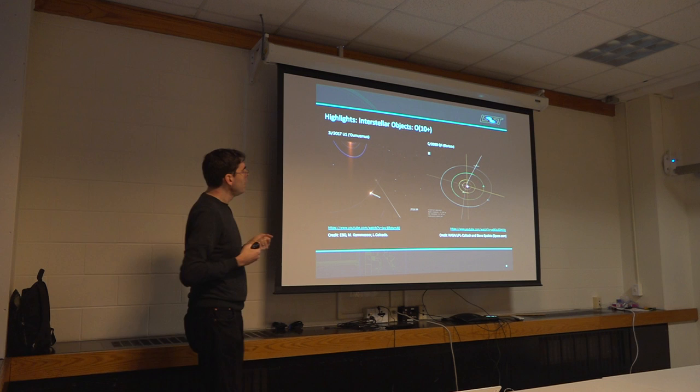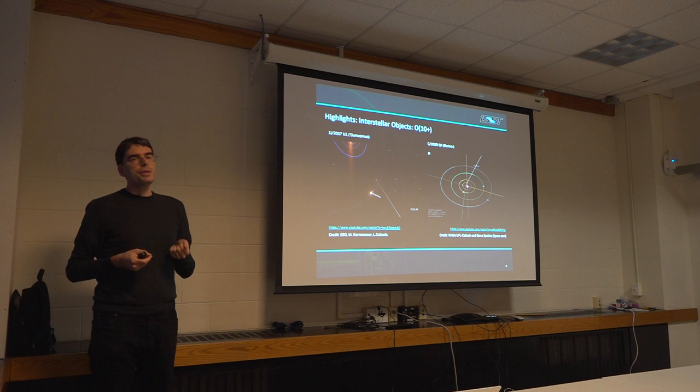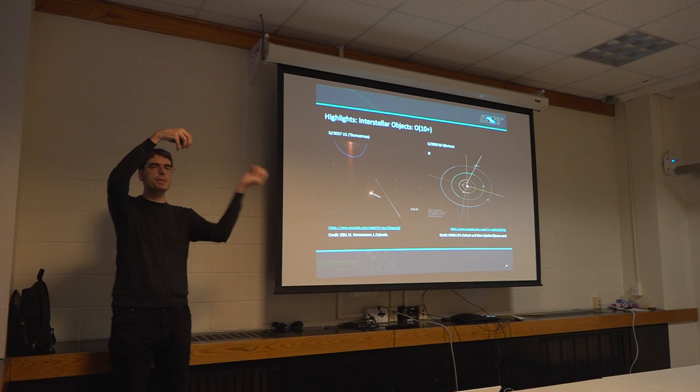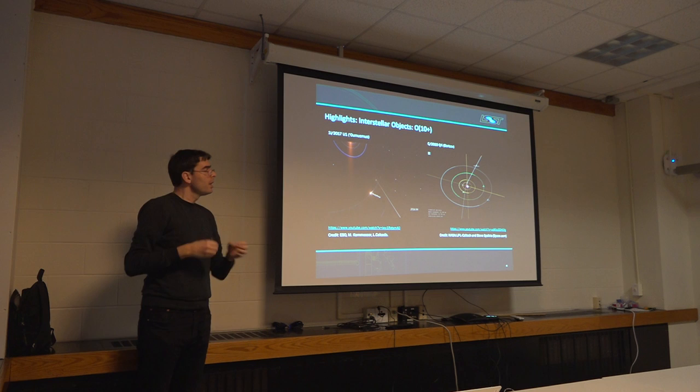And there's a really interesting European mission called comet interceptor, where right now it's being in the proposal stage. The idea is to park an interceptor into one of these dynamically unstable points in the solar system from which it's easy to get anywhere. And then as soon as an interesting object shows up, you launch towards it. Because for these, you have to be able to react on short timescales.